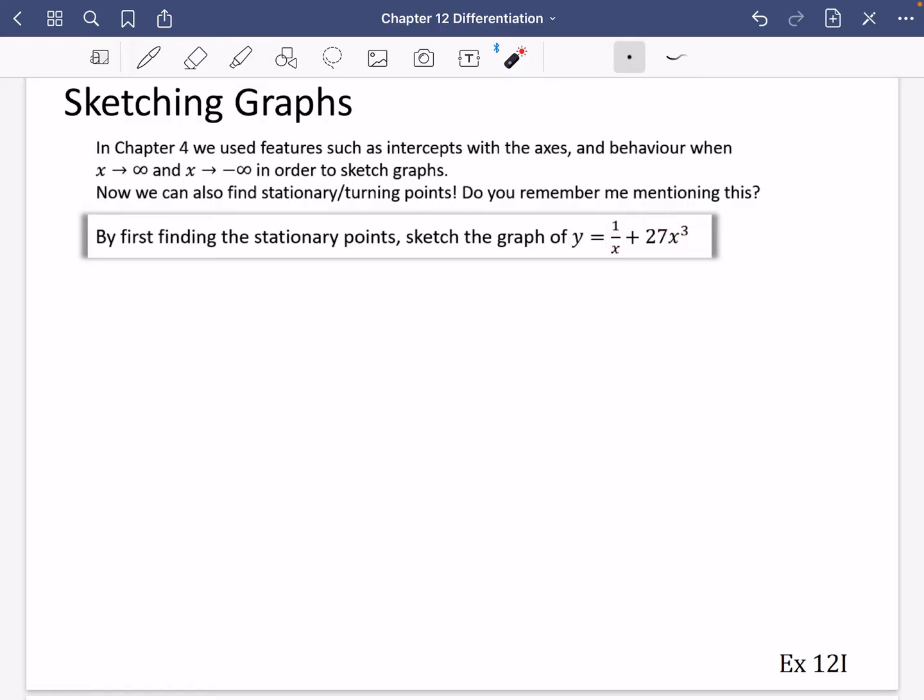Well, this is a weird graph. I don't think that has any standard way of looking. This bit looks like a reciprocal, this bit looks like a cubic, but we're adding them. So I'm not sure how this is all going to be. But it does say first of all, find the stationary points.